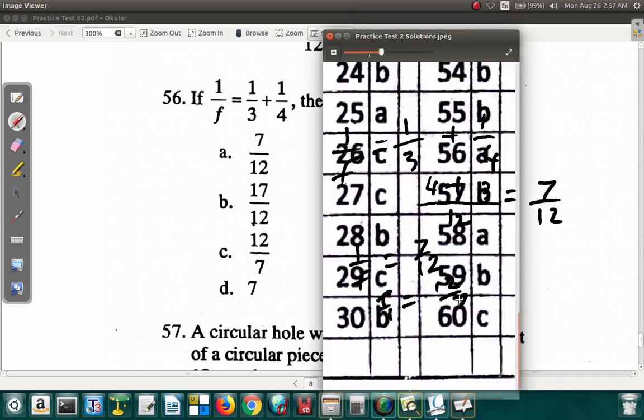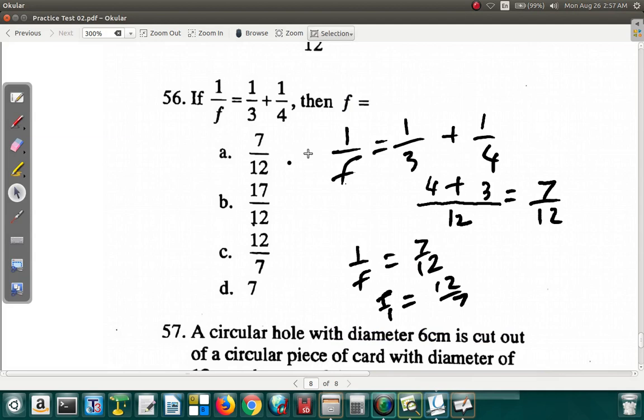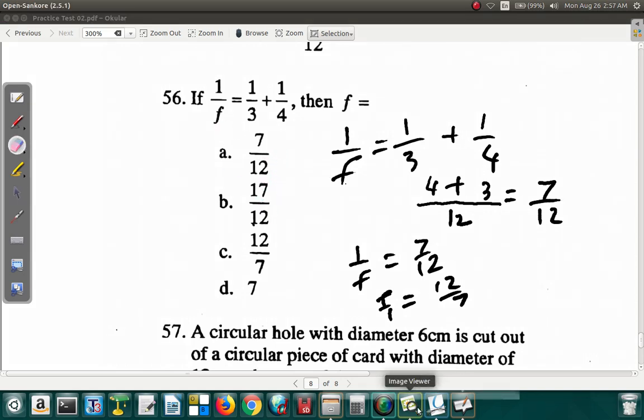56. They're saying it's A. Let's see. 1 over F is equal to 1 third plus 1 quarter. 3 into 12 is 4, 4 times 1 is 4. Plus 4 into 12 is 3, 3 times 1 is 3. 7 over 12. That's 1 over F. Then F over 1 would be 12 over 7, right? Person who did the solution seems to have made a mistake here because they're saying that 56 is A. 7 over 12. This is 1 over F. It should be F over 1.